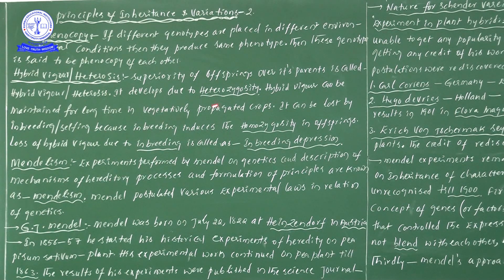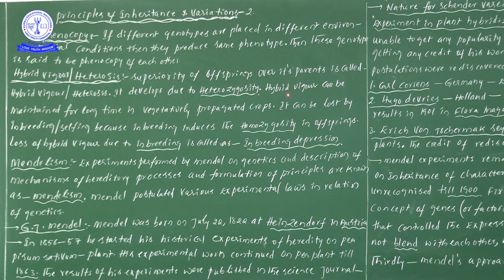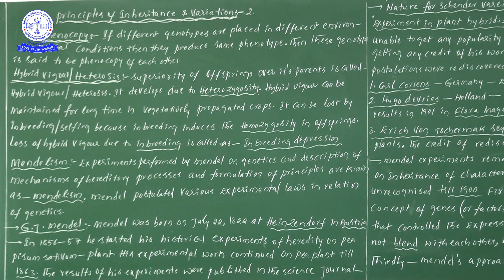Whatever good characters are in offspring will be continued for a long time. Listen carefully — in hybrid vigor, superior characters are there. Suppose this particular variety undergoes meiotic division: gametes form through gametogenesis, and then there is a chance for segregation of characters. If good characters separate, in the next generation those good characters will not enter the offspring. But if plants are propagated vegetatively, there is 100% no chance for meiotic division.